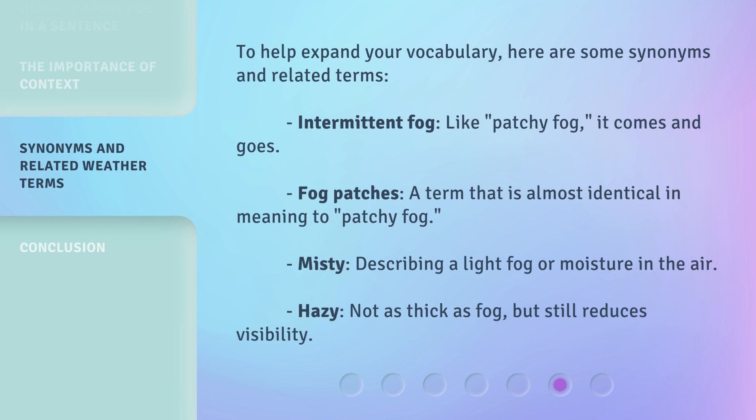To help expand your vocabulary, here are some synonyms and related terms. Intermittent fog — like patchy fog, it comes and goes. Fog patches — a term that is almost identical in meaning to patchy fog. Misty — describing a light fog or moisture in the air. Hazy — not as thick as fog, but still reduces visibility.